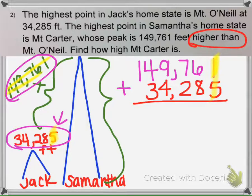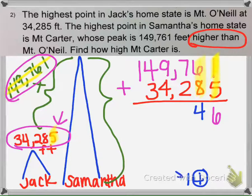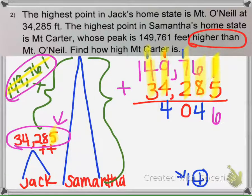So everything is lined up now. Now we're going to add. 1 + 5 is 6, and then 6 + 8 is 14. So since it's 14, the 4 is going to go here and the 1 we're going to carry over. So now we have 7 + 2 plus the 1 we carried is 10. So we're going to carry the 1 over. And we have 9 + 4 is 13, plus 1 is 14. So we're going to carry the 1 over.